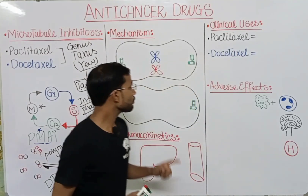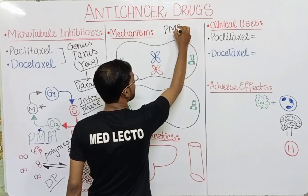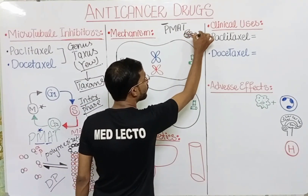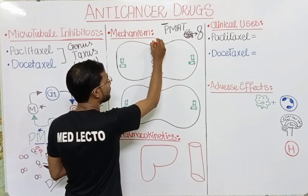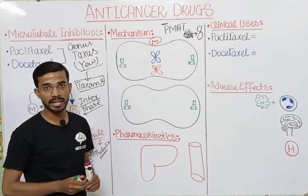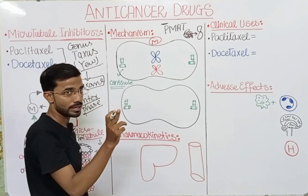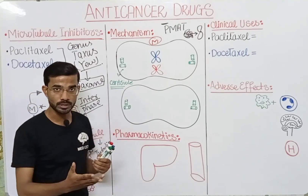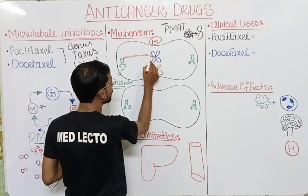In the mitotic phase there are four phases: prophase, metaphase, anaphase, and telophase. In prophase, chromatin in thread-like form converts into chromosomes. In metaphase, pairs of centrioles are present at the poles of the cell, and from the centrioles, many microtubules are produced on both sides.